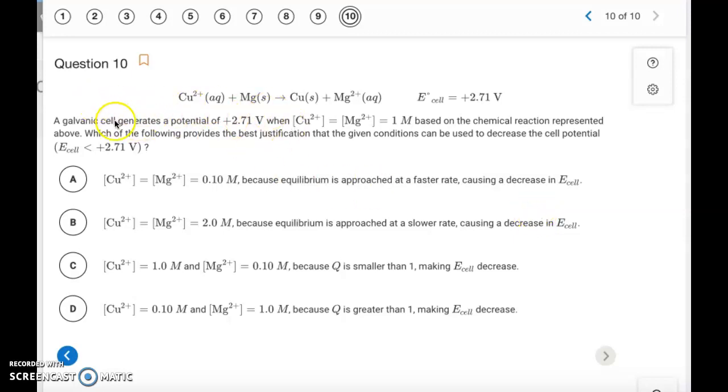Okay, and the last one, we have a galvanic cell, has a potential of 2.71 when the Cu²⁺ and the Mg²⁺ both have a concentration of 1 molar. Which of the following provides the best justification that the given conditions can be used to decrease the cell potential? So it has nothing to do with the 2 solid. It's only about the 2 ions. So we need to have a greater concentration of magnesium ion than we do of the copper 2 ion to decrease the cell voltage. So the only one that shows that, if they're both lower but they're both the same, it's going to be the same, that the cell voltage should be the same. So that eliminates A and B. So we want more magnesium, so it's going to cause it to shift left, make the Q value greater than 1, so that's going to be letter D.